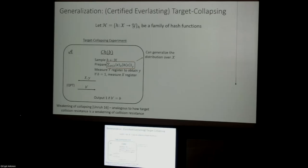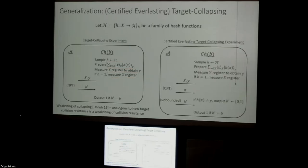We can generalize the distribution over x to any fixed distribution and generalize the measurement of the x register to coarse-grained measurements while still getting an interesting notion of target collapsing. We extend the target collapsing experiment to a certified everlasting version: in the first stage it's the same, but we ask the adversary to output a pre-image of Y. If they don't, we abort and output a random bit. If they do, we allow them to be completely unbounded and then guess bit b prime. This captures the fact that if they measure the pre-image and return it, they've erased all information about whether we had previously measured the state.